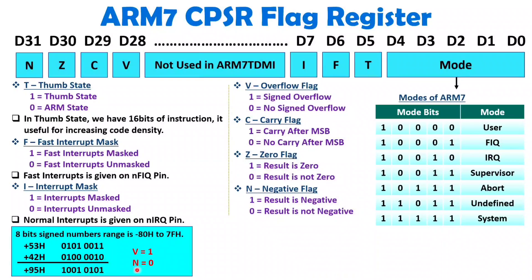However, N equals 0 because the answer is actually positive — there is a true positive overflow. In Intel processors like the 8085 and 8086, the sign was represented by the MSB, and here MSB is 1. But the MSB does not correctly indicate whether data is positive or negative in case of overflow. With ARM7, the negative flag correctly indicates this, making ARM7's flag register superior to Intel's 8085/8086 flag register.